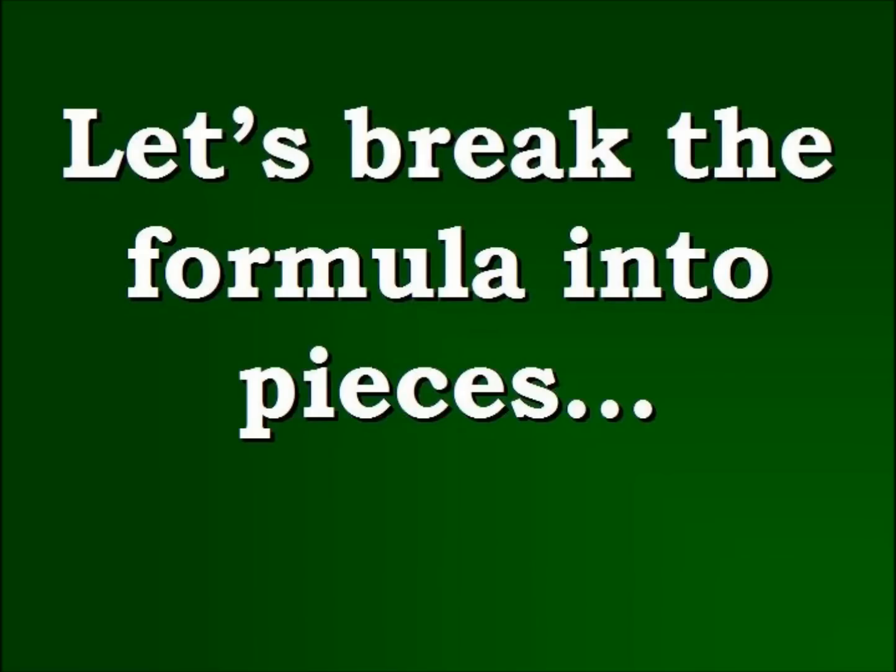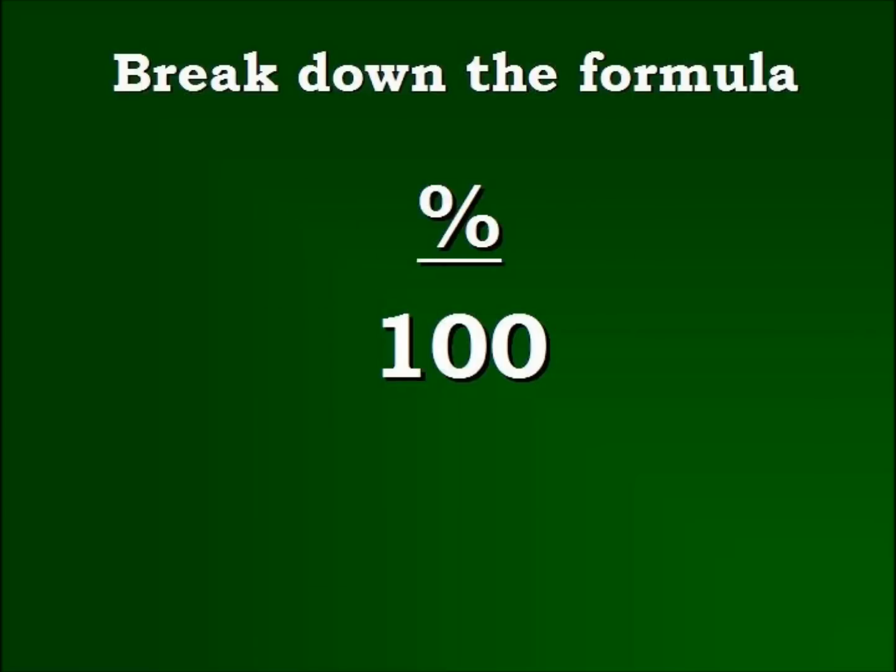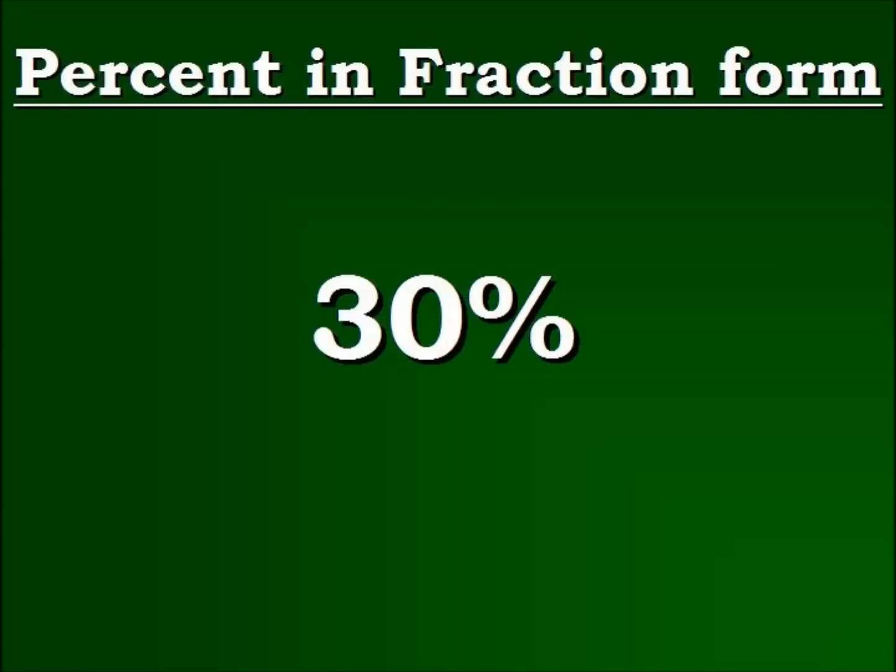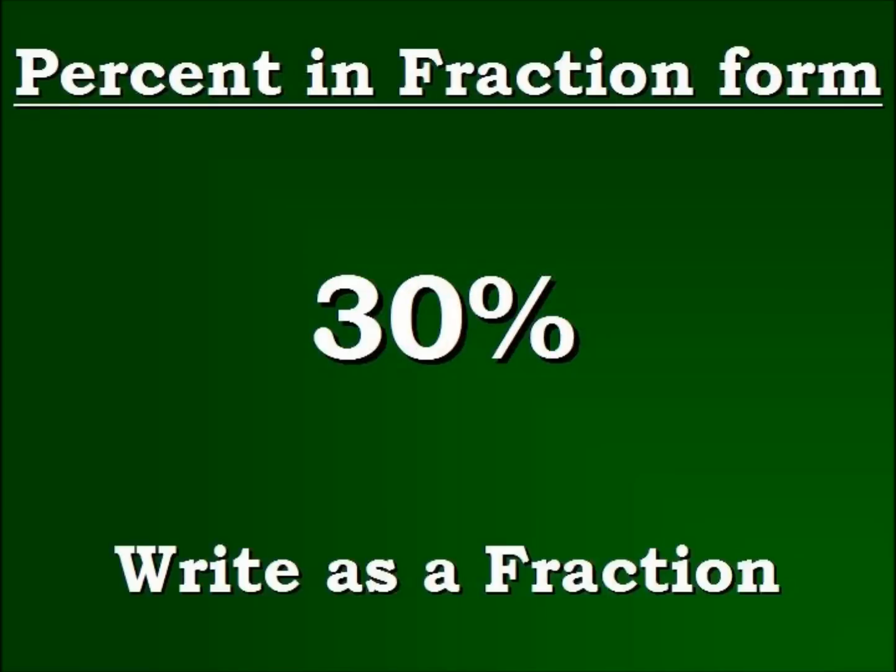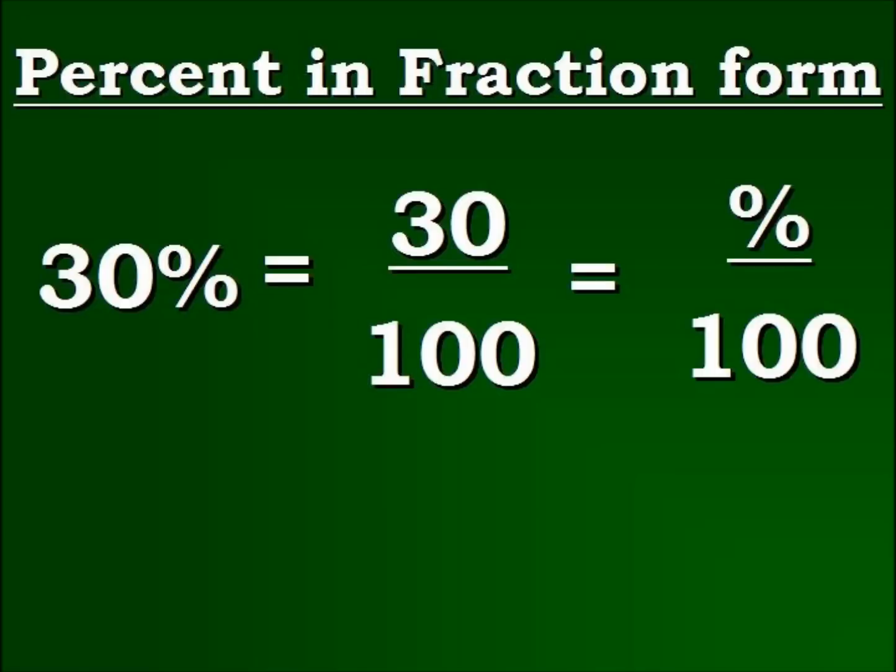Let's break this formula into pieces. Let's begin with the percent over 100 part. To break this down you look at this, this is pretty much just a percentage in fraction form. Thus we're going to take an example like 30%, we're going to write this as a fraction. We have 30% equals 30 over 100 which fits into our formula percent over 100.